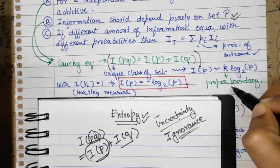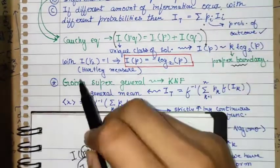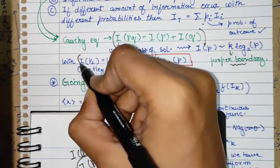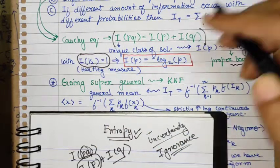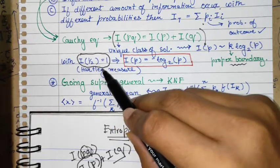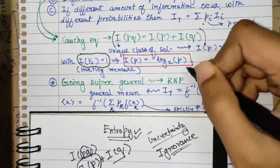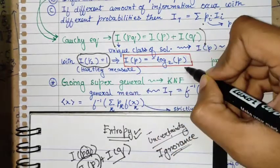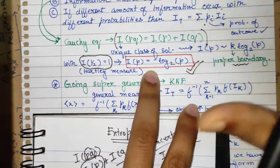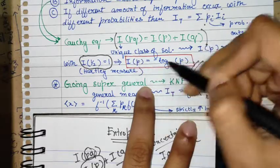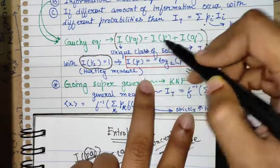The parameter k is chosen by proper boundary conditions. With I(1/2) = 1 as the boundary condition — which is related to the fact that uniform distributions should have maximum uncertainty — we get what is called the Hartley measure, with I(p) given in this form. We have quantified the functional form of I(p) by showing the general class of functions satisfying the Cauchy equation is the log form.